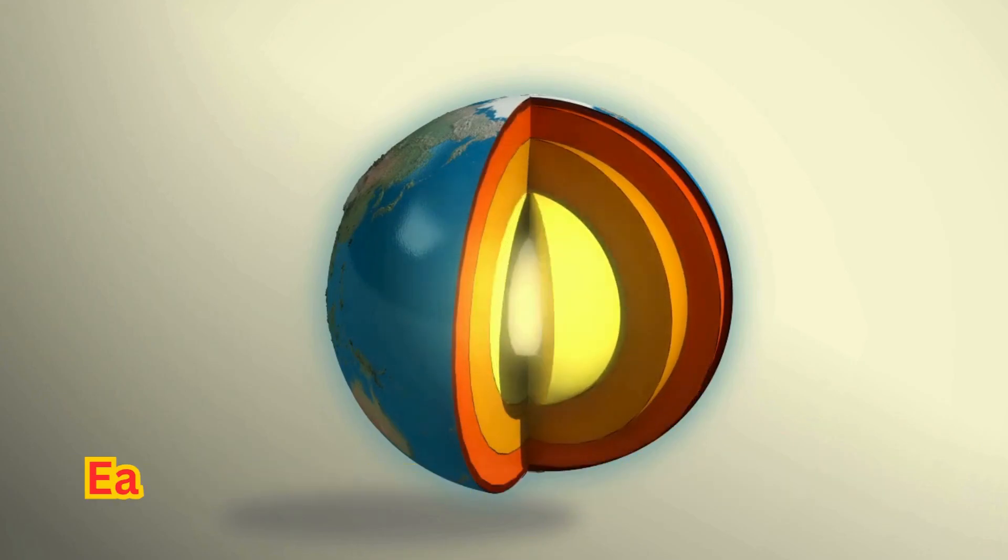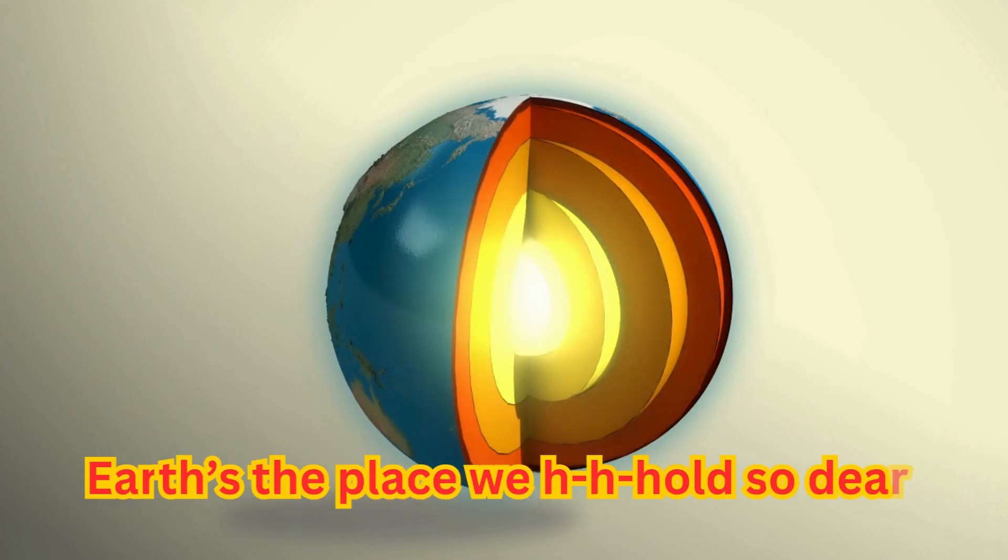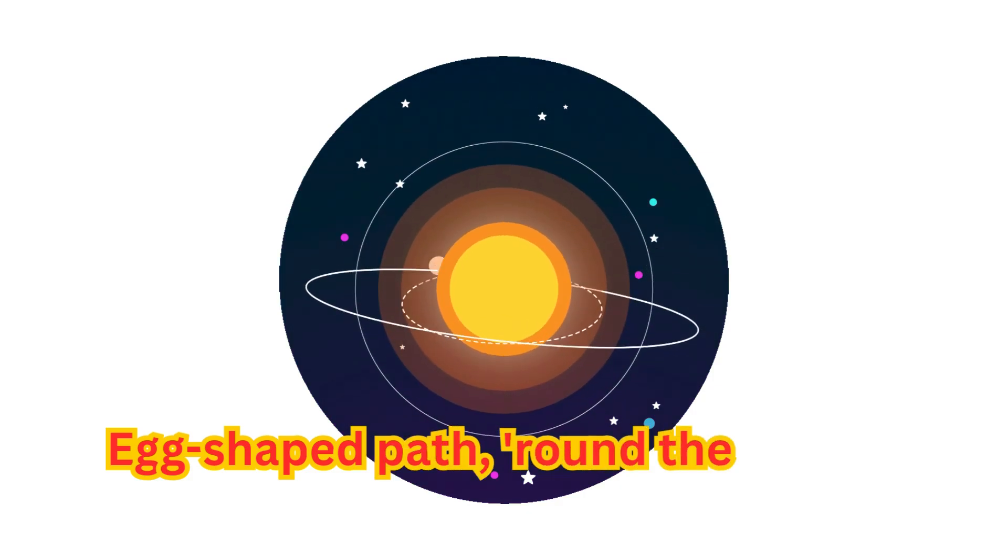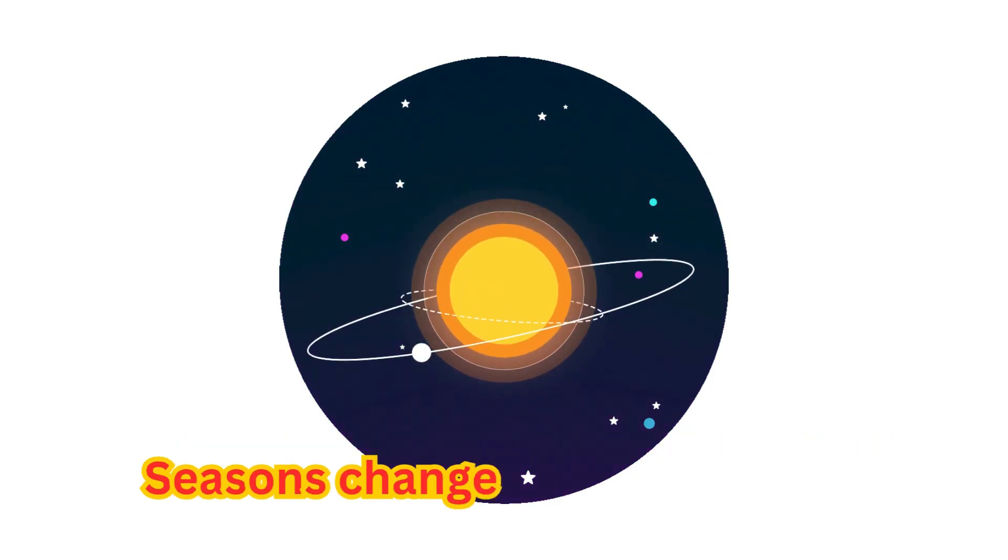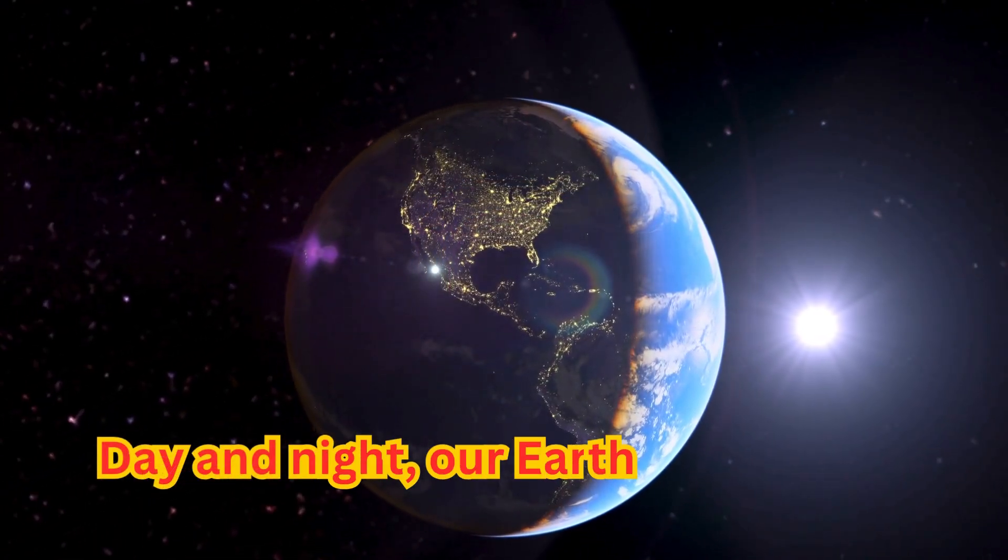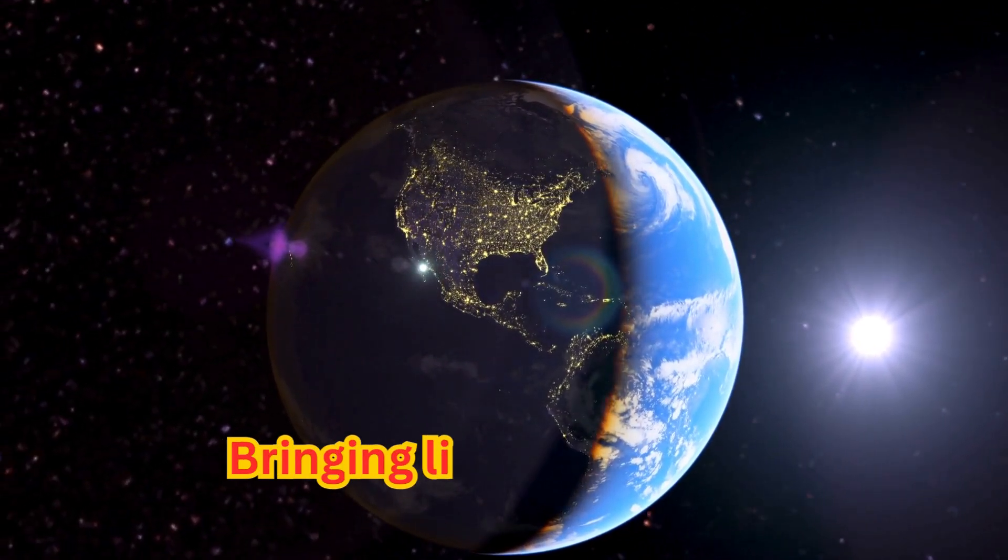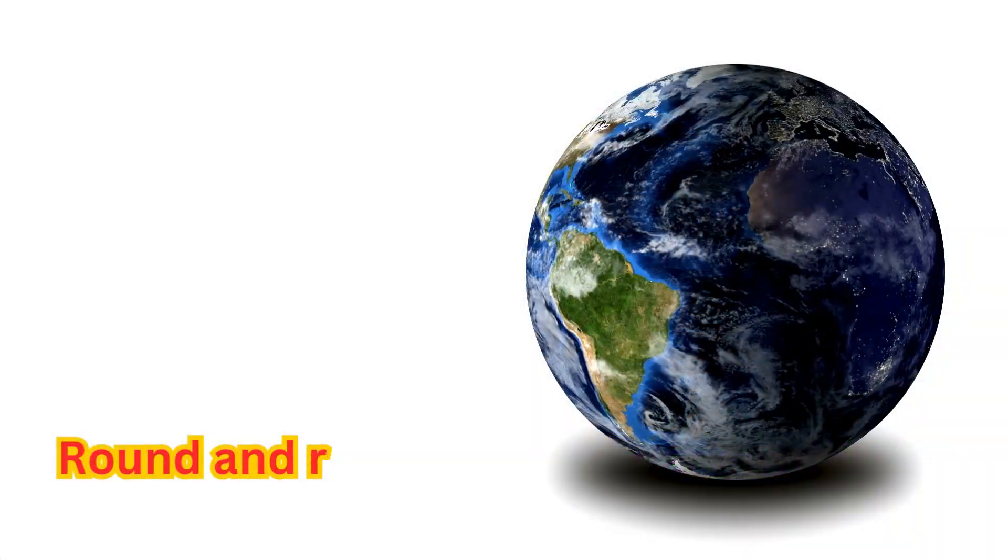Egg-shaped path around the sun we go, seasons change from rain to snow. Day and night our earth does spin, bringing light and dark within.